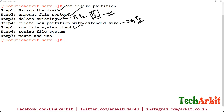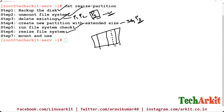After creating the new partition, run a file system check to verify that blocks and inodes are correct and there are no errors. Then resize the file system: since my file system is ext4, I'll run resize2fs so that the additional 1 GB gets added with the ext4 file system, making the partition 3 GB total. Finally, mount and use the partition.